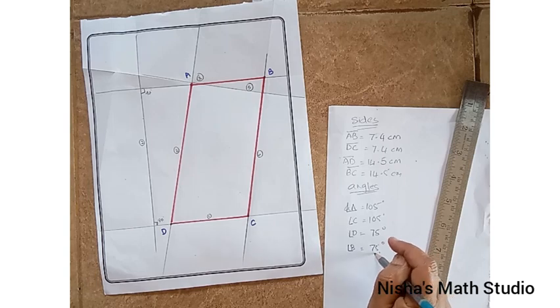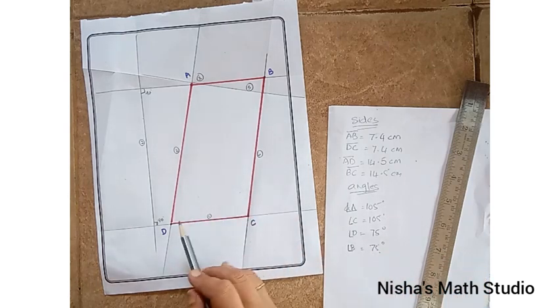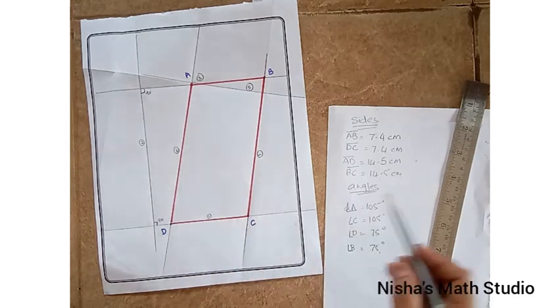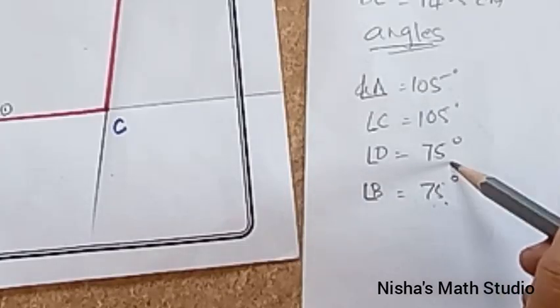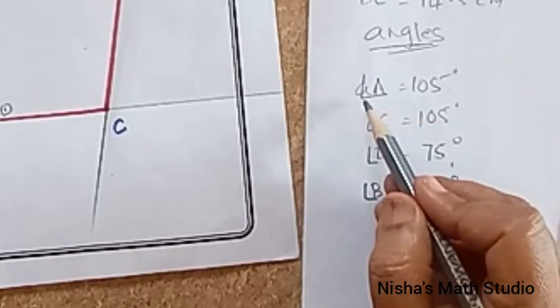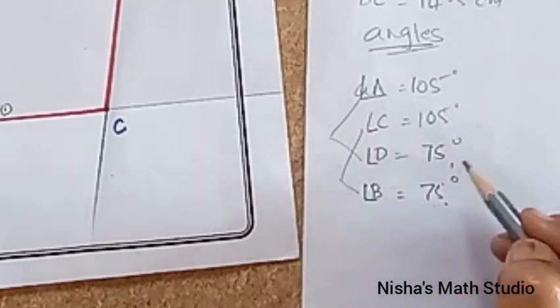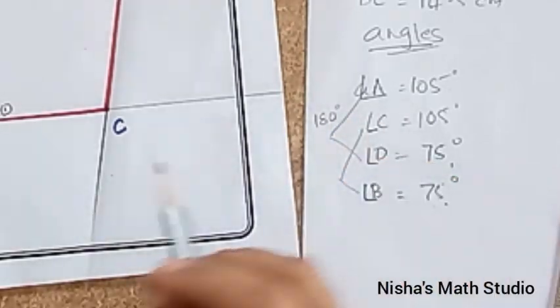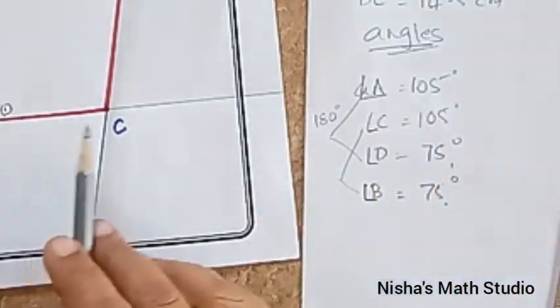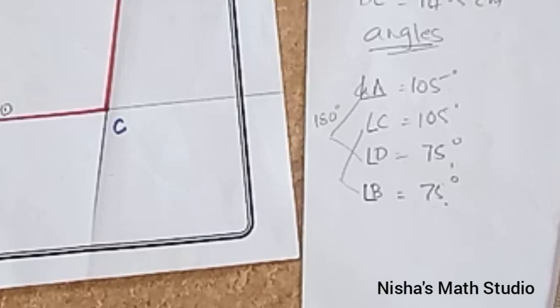The next property was, adjacent angles. Adjacent angles should be supplementary. See here, 105 plus 75 will give you, these are adjacent angles, isn't it? A and D, B and C. These are adjacent angles. 105 plus 75 will give you 180. Supplementary is nothing but adding two sides, you should get 180. So, we have done with that.